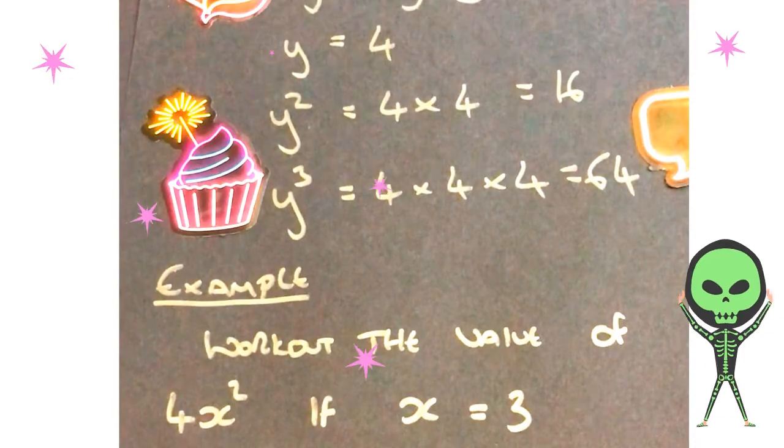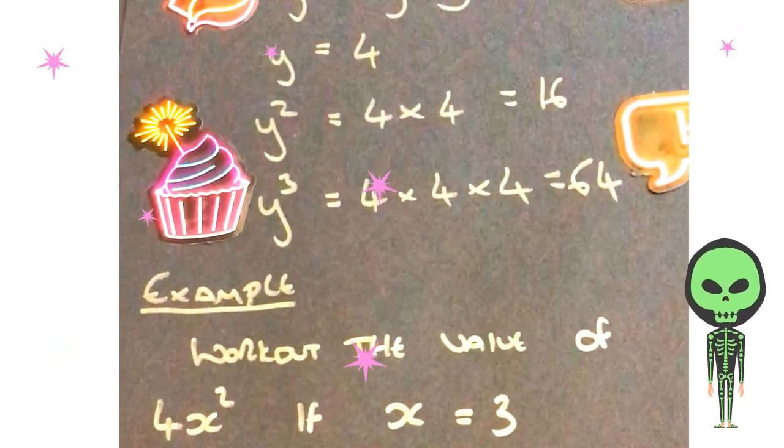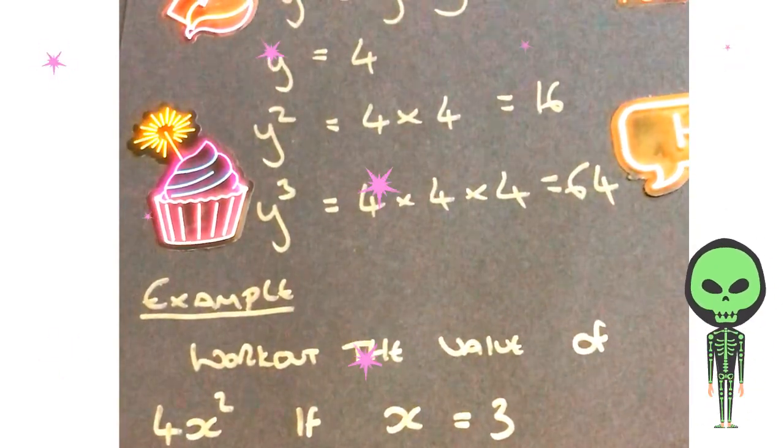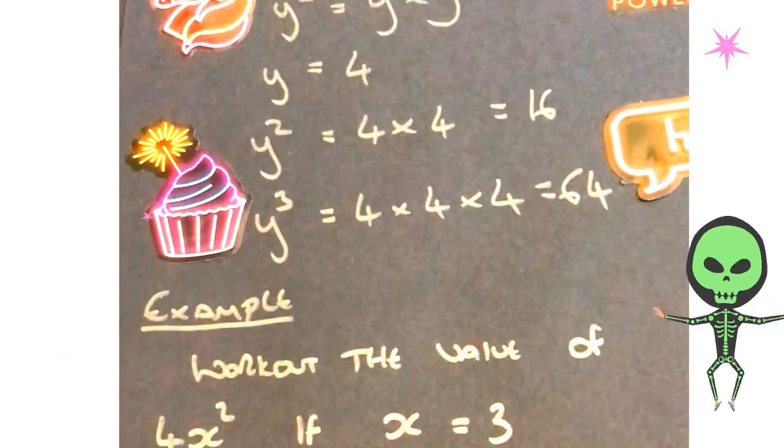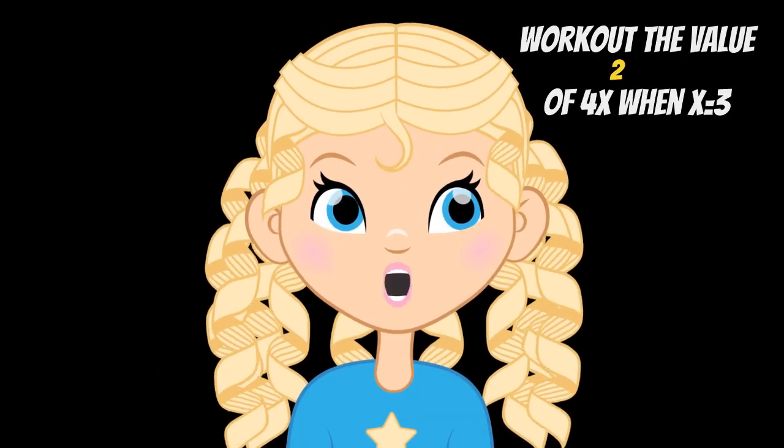So BIDMAS tells me it's brackets - we don't have any brackets - then indices, and we do have an indice. We have that x to the power of 2, so that x squared. So we'll have to do that x squared first. So I'm going to do my x squared first, and x is equal to 3, so 3 squared is equal to 9.